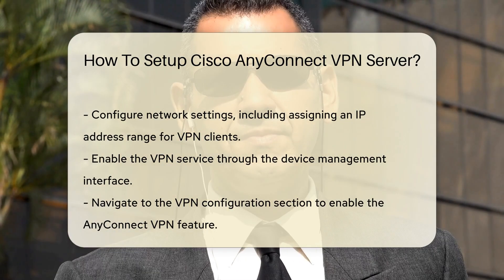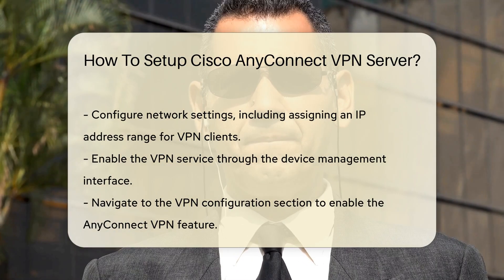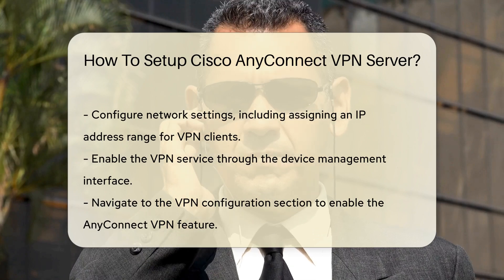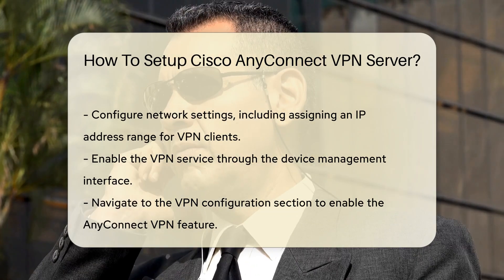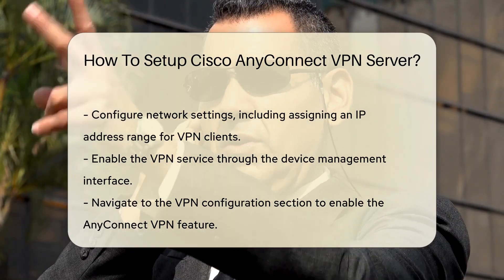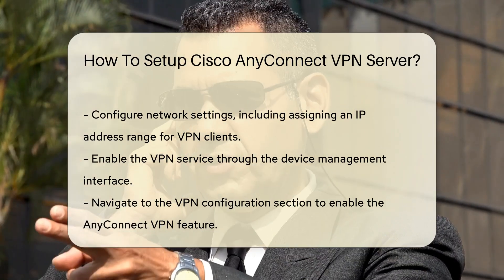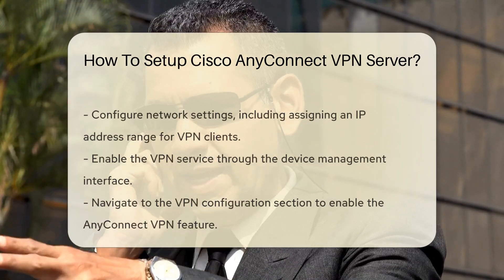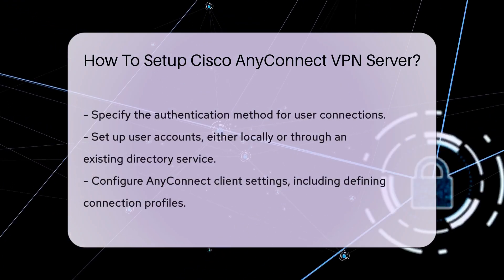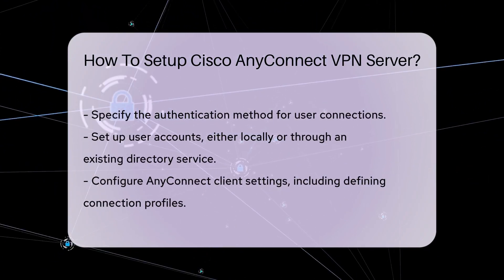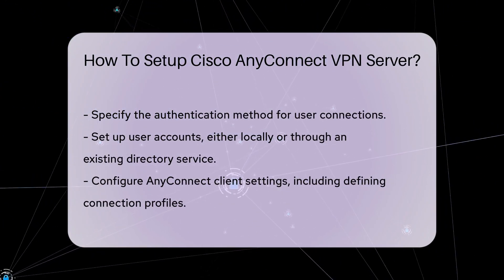Proceed to enable the VPN service. Access the device management interface, typically through a web browser. Navigate to the VPN configuration section, enable the AnyConnect VPN feature, and specify the authentication method.